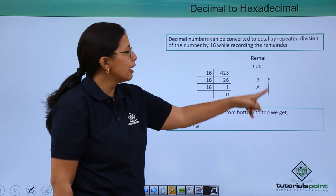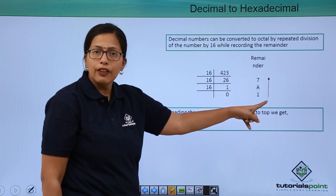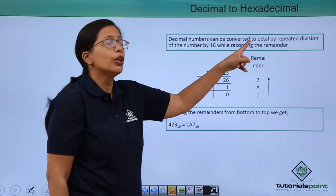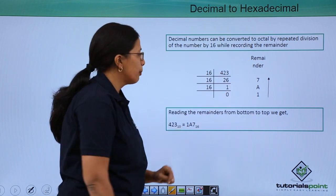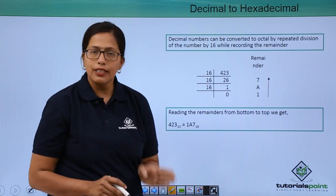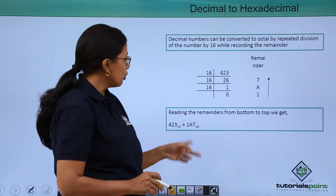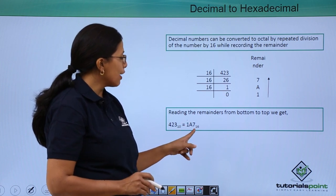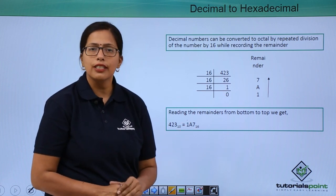I will read the remainders from the least significant digit at the bottom to the most significant digit at the top. What I will get is 423 to the base 10 is equivalent to 1A7 to the base of 16.